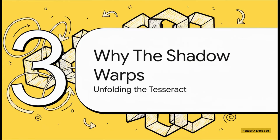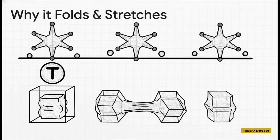I know what you're thinking — fine, it's a shadow, but why does it look so weird? Why is it constantly folding in on itself and turning inside out? That, my friends, is maybe the coolest part. It's not glitching, it's not a bad animation. This constant, bizarre movement is exactly what happens when a higher-dimensional object moves through a lower dimension.